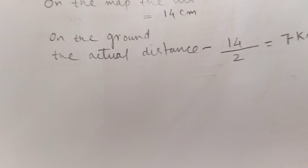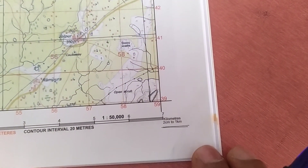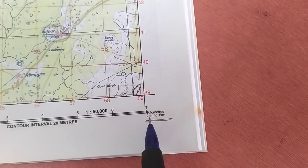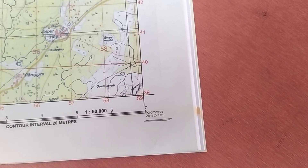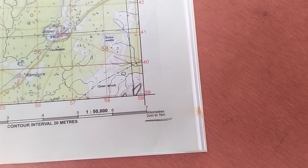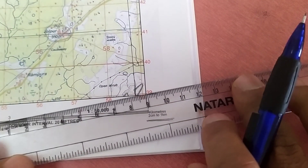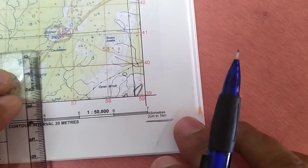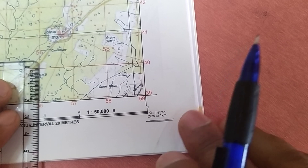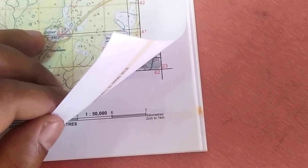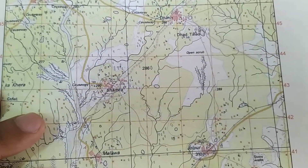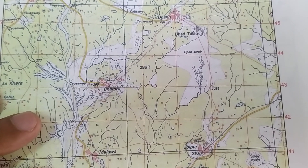The scale of this map is 2 centimeters equal to 1 kilometer. So every 2 centimeters on the toposheet represents 1 kilometer. Every grid square is 2 centimeters, which equals 1 kilometer. Wherever you measure on the toposheet, the reading in centimeters must be divided by 2 to convert it into kilometers.